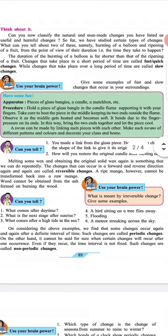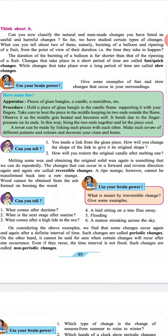Have some fun. Apparatus: Pieces of glass bangle, a candle, a matchbox, etc. Procedure: Hold a piece of glass bangle in the candle flame, supporting it with your fingers. Take care to heat the piece in the middle, keeping its two ends outside the flame.